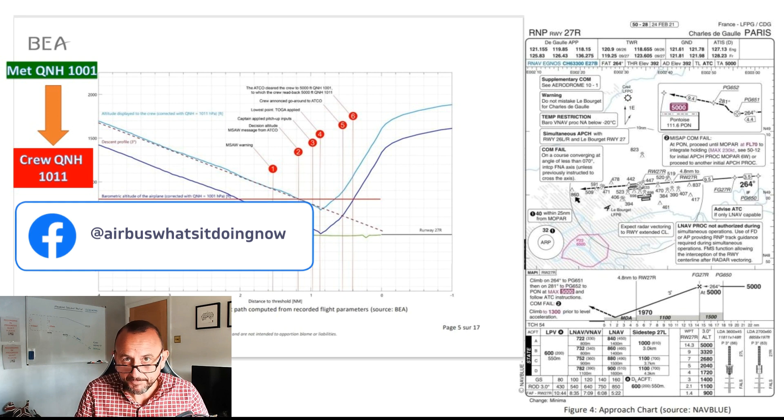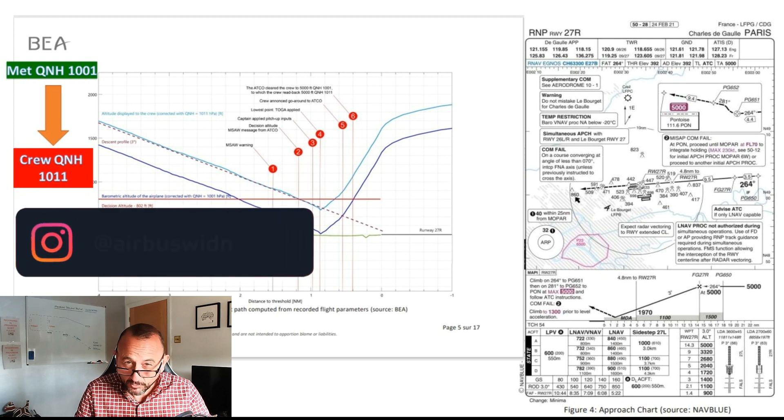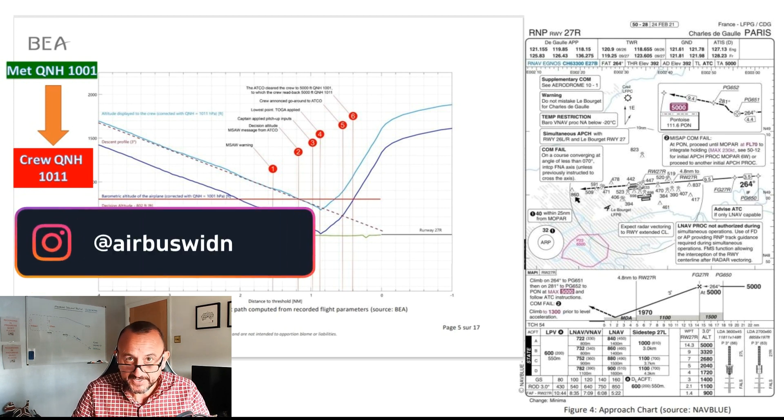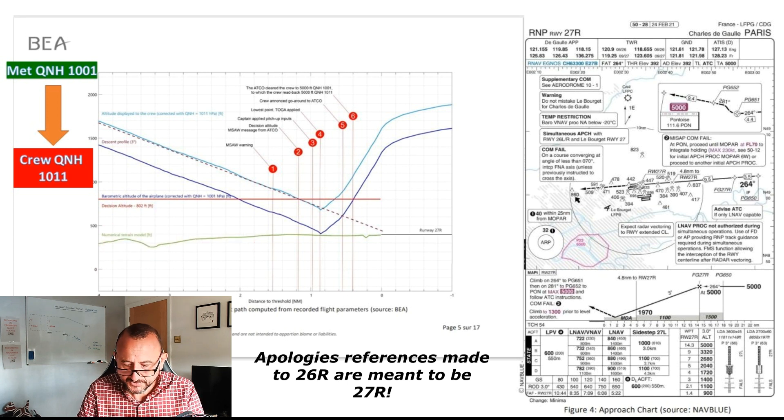The aircraft flew an RNP approach into 26 right Paris Charles de Gaulle that almost ended up in a CFIT incident - that's Controlled Flight Into Terrain - where the aircraft almost landed short of the runway. This was all down to the fact that the wrong QNH was set for the approach.